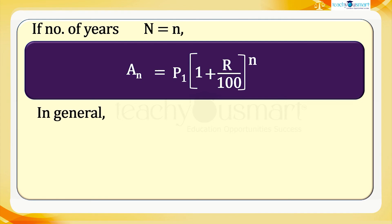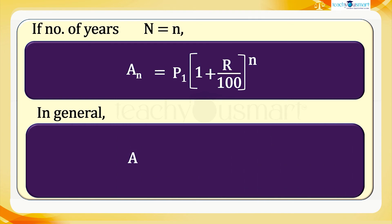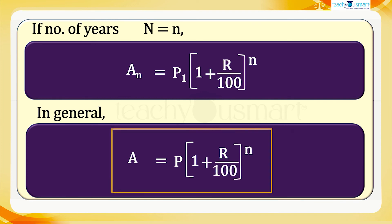In general, the total amount A equals P × (1 + r/100)ⁿ, where P is the principal on which interest is compounded annually at a rate of r percent for n years.